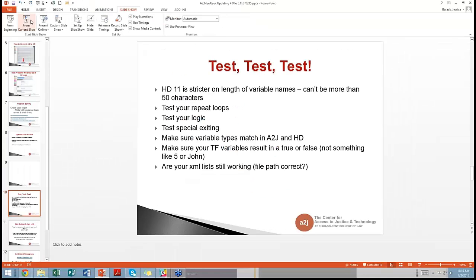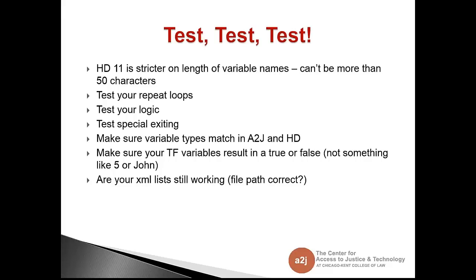That leads right into testing, testing, testing. Hot Docs 11 is stricter on variable name lengths — they cannot be more than 50 characters. A to J 5 will pop up a message when you're previewing in desktop saying the variable name is too long. So if any of your 4.0 interviews have variable names longer than 50 characters, that needs to be changed. Make sure to test your repeat loops — go down all those little branches and avenues to make sure your loops work. We haven't seen any problems with repeat loops, but it can be a tricky spot.